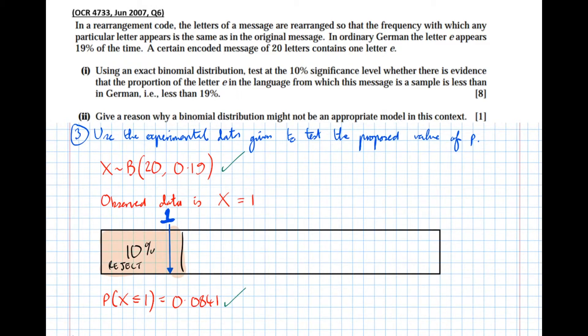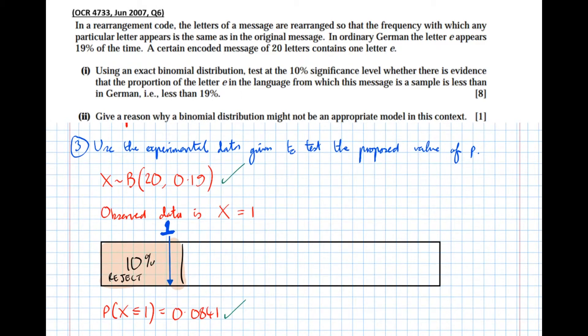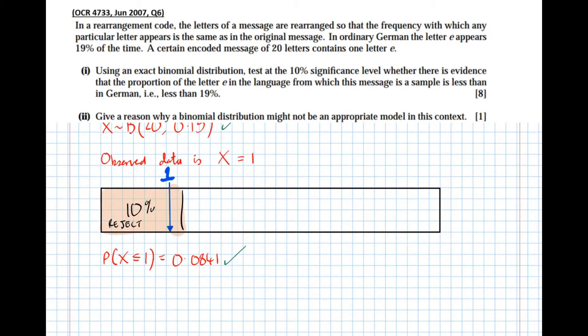So step four, conclude in context. So we can now see that our observed value of one cumulatively lies in the rejection region. So the next step, let's express that, compare calculated p-value.